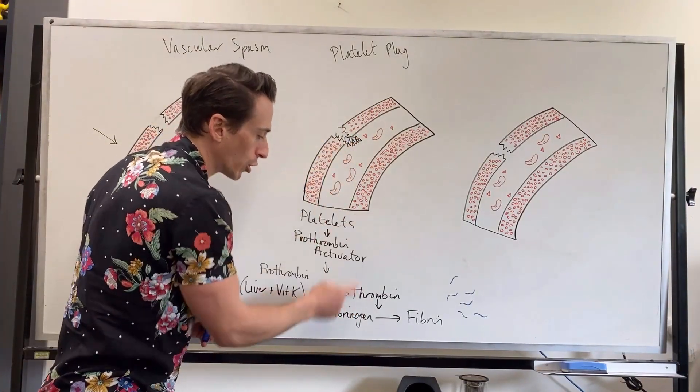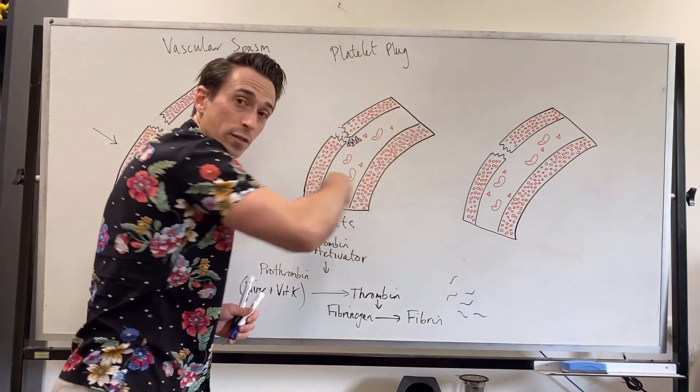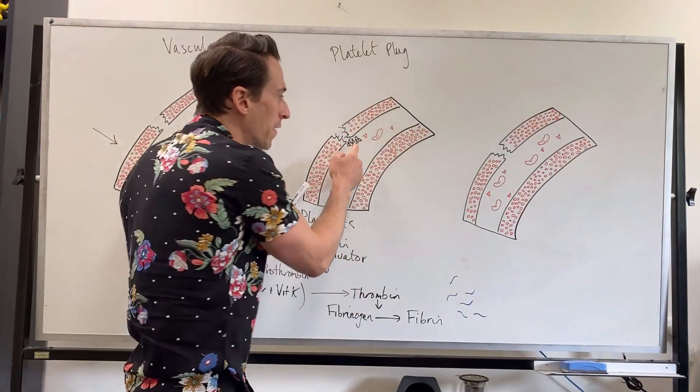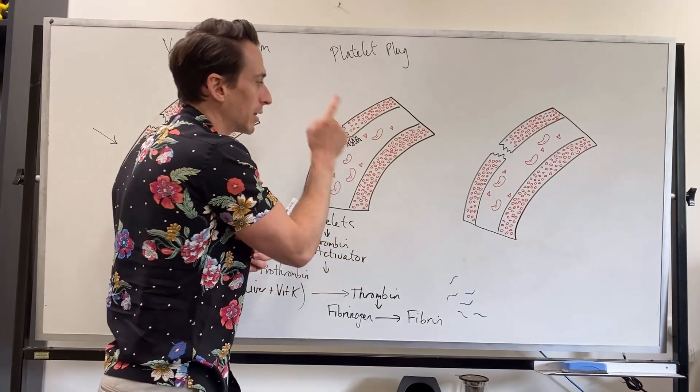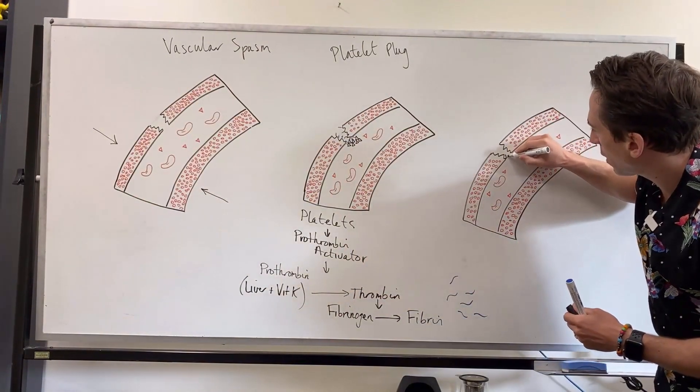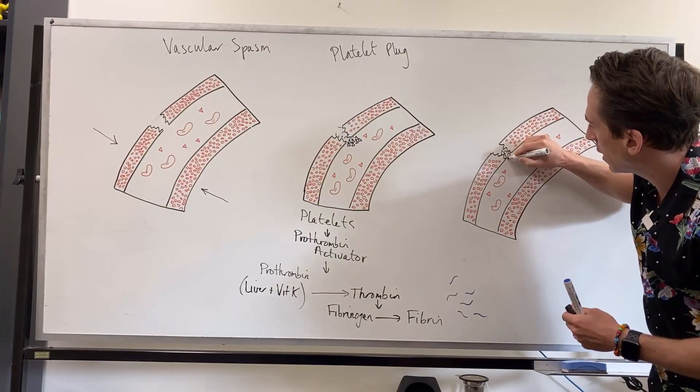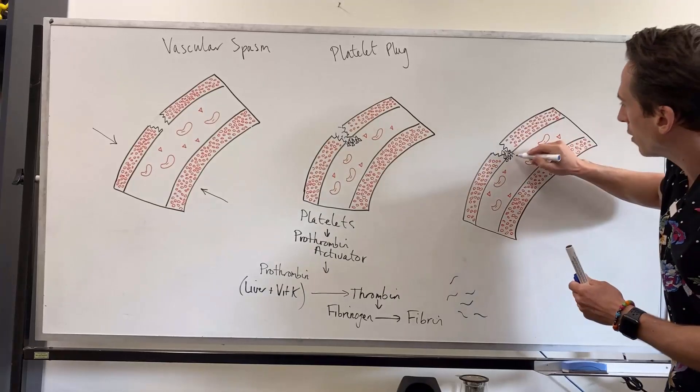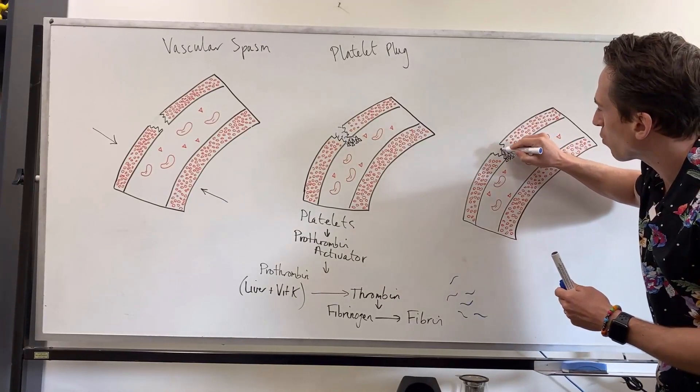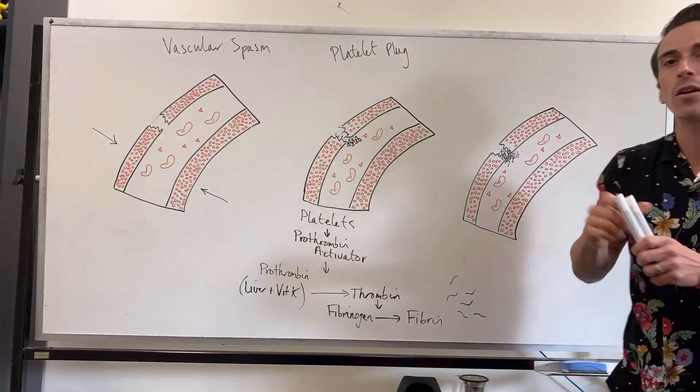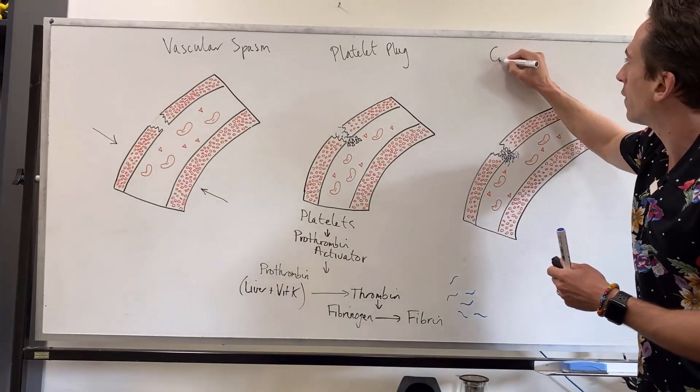Now thrombin will turn fibrinogen, which is always floating through, into something called fibrin. So now we also have fibrin at the site of the platelet plug. And what this fibrin does is in addition to the platelets that are now accumulating at this damage site, we now have all these fibrin fibers. And what they do is they reinforce the clot. And this is the third phase known as the coagulation phase.